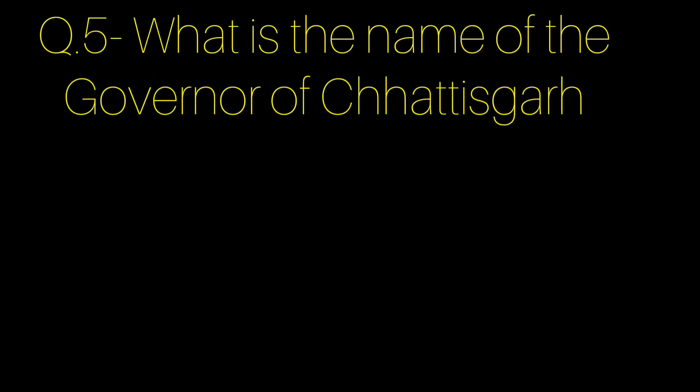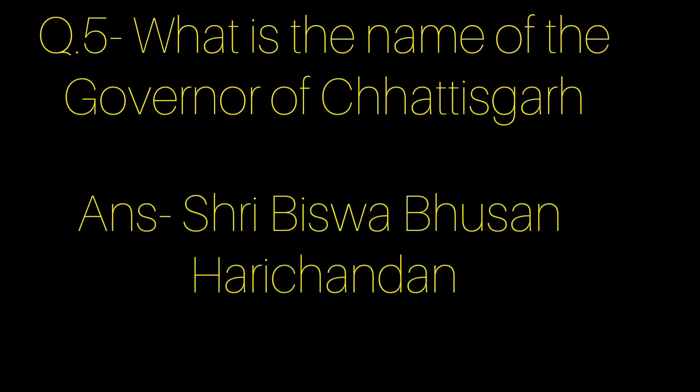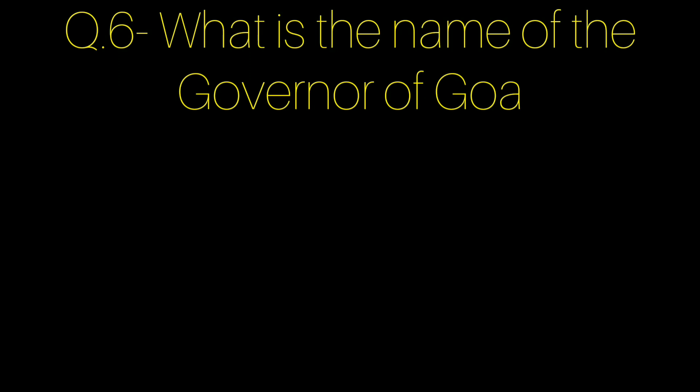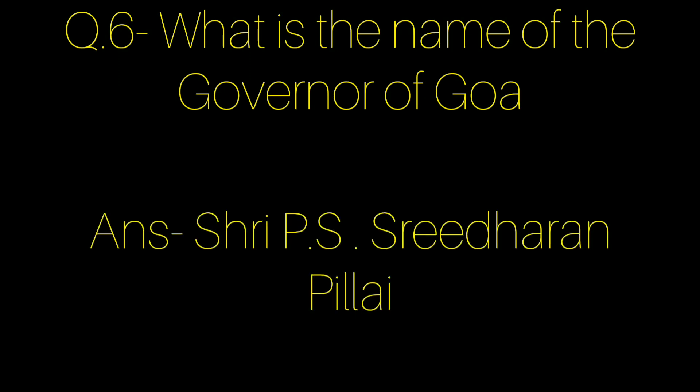Question number 5: What is the name of the governor of Chhattisgarh? Answer: Shri Bishwabhushan Harichandhan. Question number 6: What is the name of the governor of Goa? Answer: Shri P.S. Shridharan Pilai.